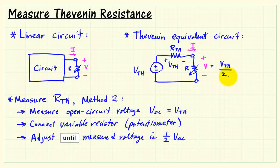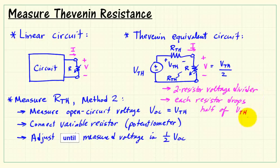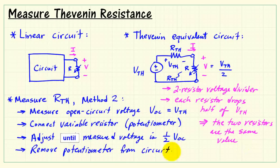The voltage that appears across your potentiometer or variable resistor is related according to a two-resistor voltage divider. Each resistor drops exactly half of the Thevenin source voltage, so the two resistors have the same value.